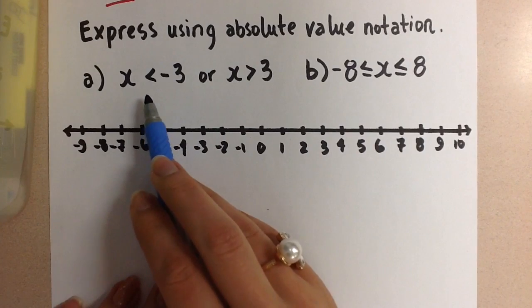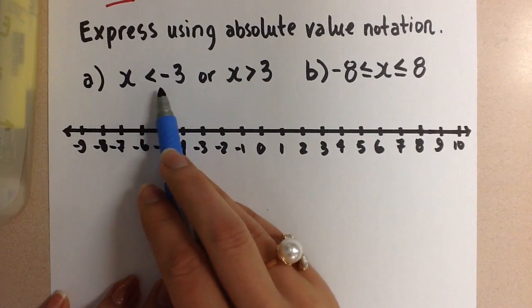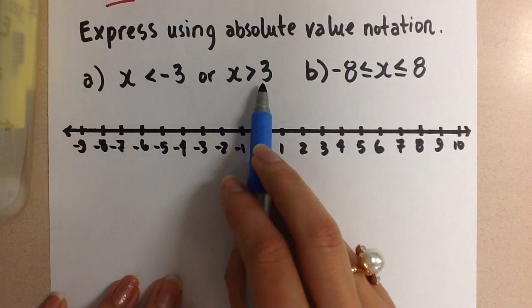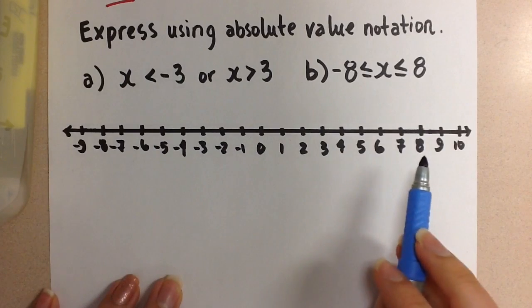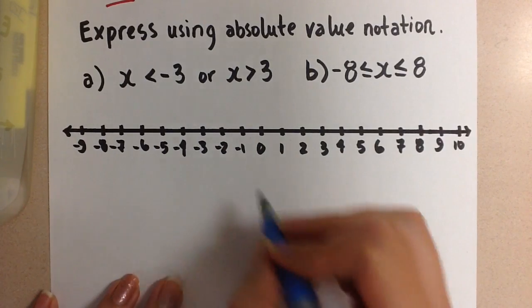We have two inequalities, x is less than negative 3 or x is greater than 3. Let's graph this on the number line so we can remember what this looks like.